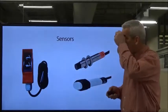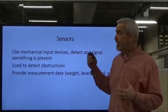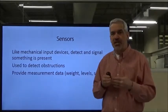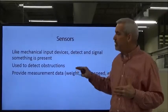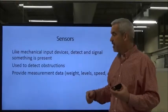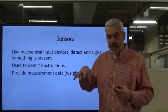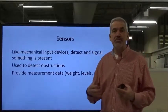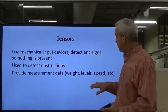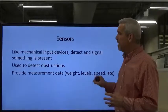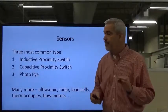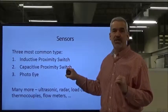We've got about three different kinds of sensors. They detect when something is present and change the signal. Most times they're used to detect the presence of something very close to them, or if something's obstructing them. The three most common types — and the three you're going to work with in the lab — are the inductive proximity switch, the capacitive proximity switch, and the photo-eye, also called a photoelectric sensor.